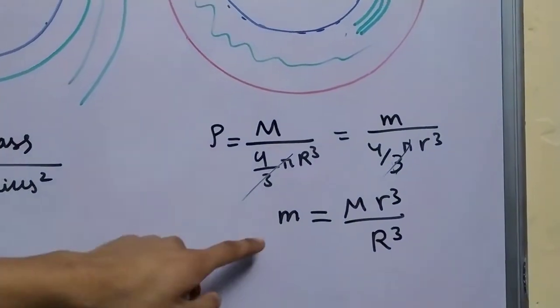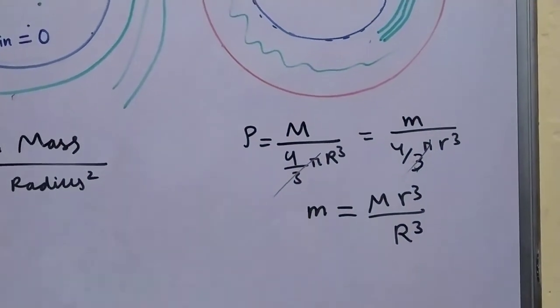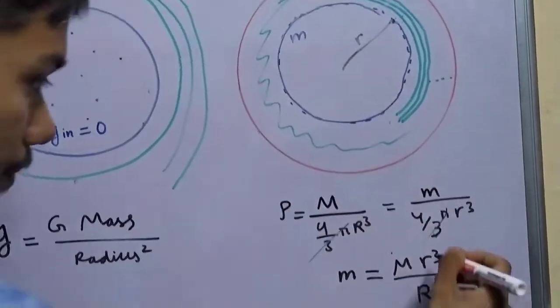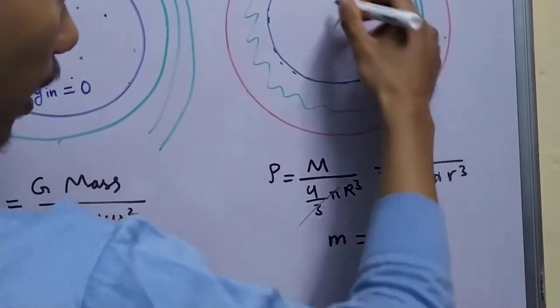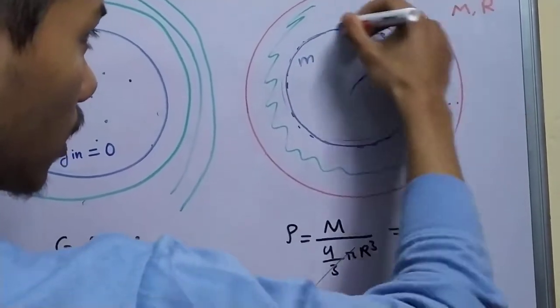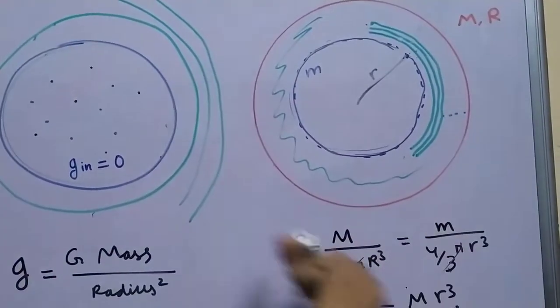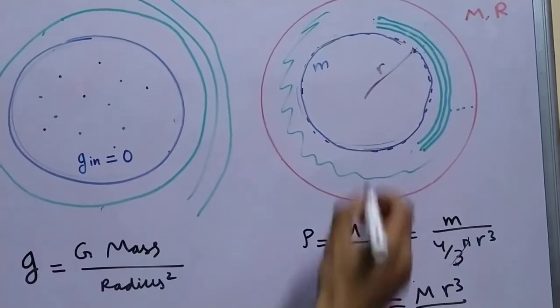So we are left with small m equal to m r cube divided by capital r cube. So basically we found out the mass in terms of the original mass, the mass of this entire sphere, and the radius of this blue sphere and the larger radius.